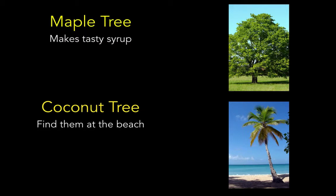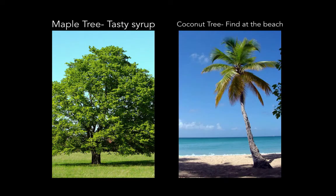Here's another example: there's a maple tree — it gives us tasty syrup — and the coconut tree, we find them at the beach. This wouldn't be that hard to figure out which is which, but there is some blank space in between that's really unnecessary. This could be remedied by using an example where the text and the photograph are right near each other.